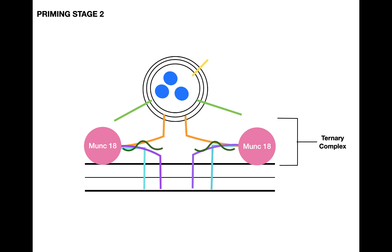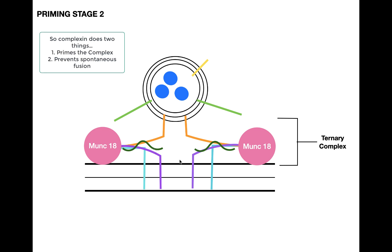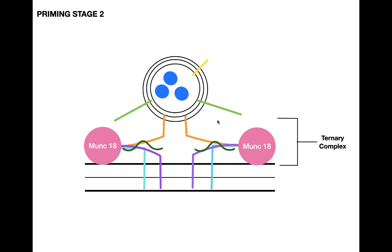When complexin binds to the complex — which occurs in priming stage 2 — it primes the complex to get it ready to fuse the vesicle when a signal comes in. Complexin basically prevents the spontaneous fusion of the vesicle with the presynaptic membrane, keeping it in a ready-to-go state. When calcium flows in, complexin leaves and vesicular fusion occurs.